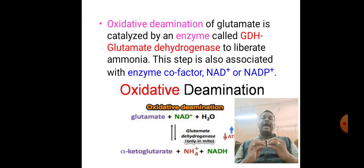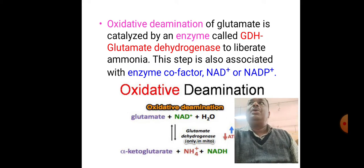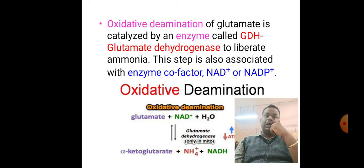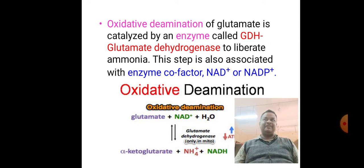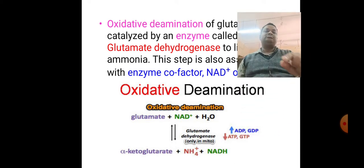The enzyme GDH removes the amino group from glutamate and is associated with the cofactor NAD+ or NADP+. This means GDH is not independent in its activity — it depends on its coenzyme NAD or NADP+. This is depicted in the picture in the slide.